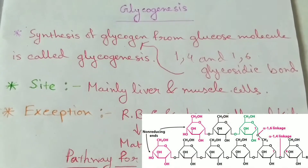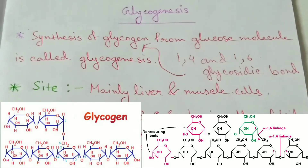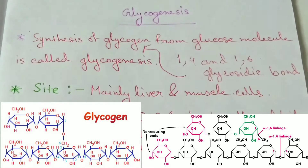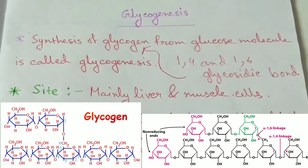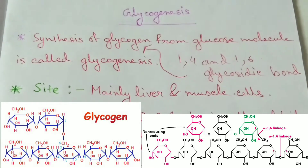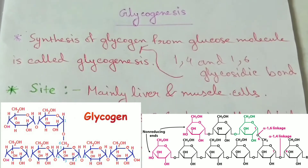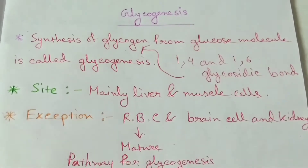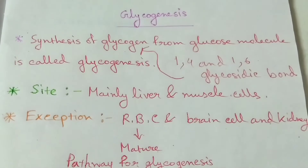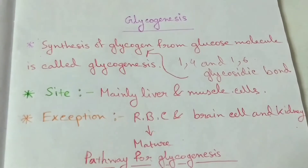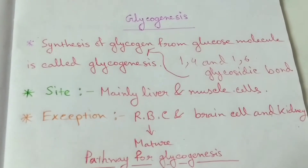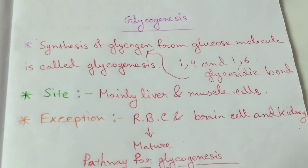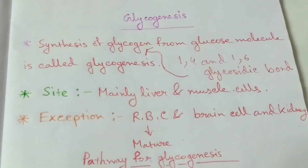That means when more than one glucose molecule are linked with each other by means of 1,4 and 1,6 glycosidic bond, that forms the glycogen. The glycogenesis pathway is the anabolic pathway of carbohydrate metabolism.